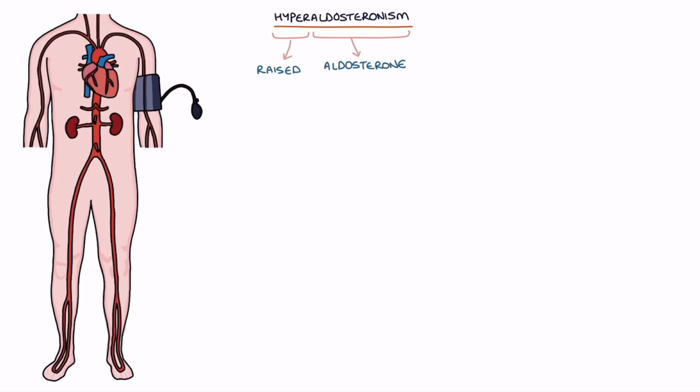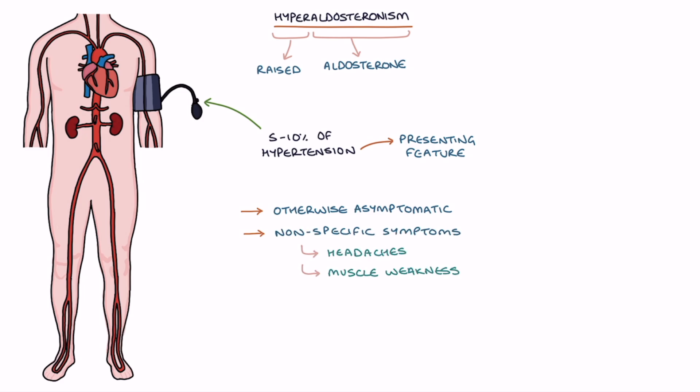Next let's talk about hyperaldosteronism. Hyperaldosteronism refers to raised aldosterone. Hyperaldosteronism may be present in 5-10% of patients who have hypertension or high blood pressure. Hypertension is the crucial presenting feature and many patients are otherwise asymptomatic. It may cause non-specific symptoms such as headaches, muscle weakness, and fatigue.